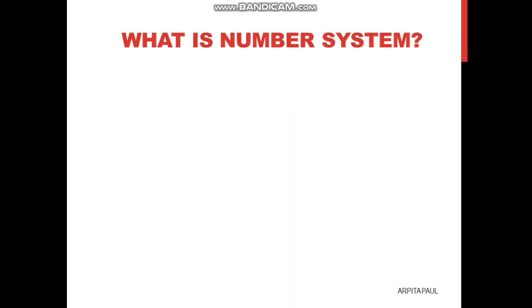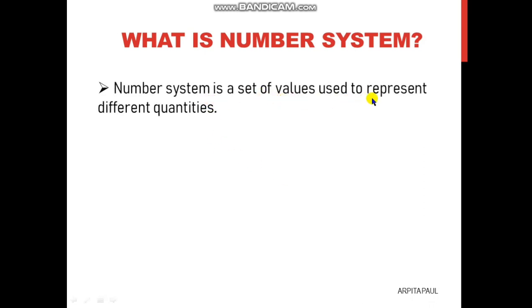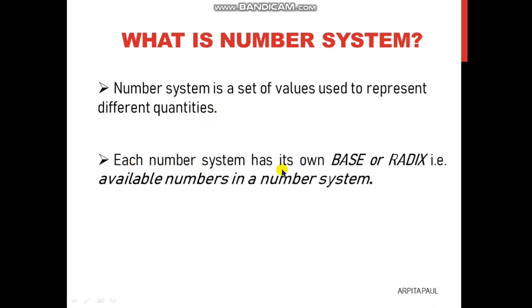First, you need to know what is a number system. Basically, a number system is a set of values used to represent different quantities. In maths you have learned different numbers to represent different types of quantities like natural numbers, real numbers, positive numbers, negative numbers, etc. Same way in computer also we have different number systems to represent different quantities. Each number system has its own base or radix — that is the available numbers in a number system. The base or radix is the minimum numbers present in a number system, and all those minimum numbers are called the base of that number system. It is also called radix.